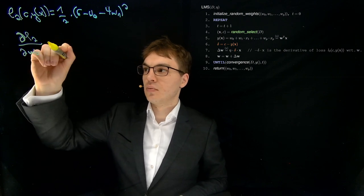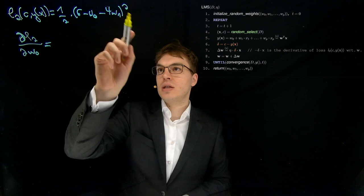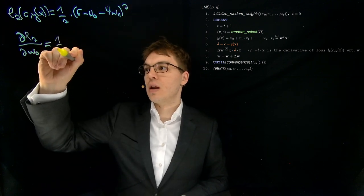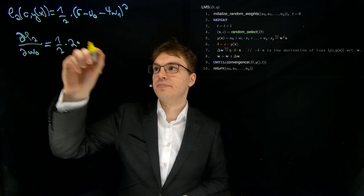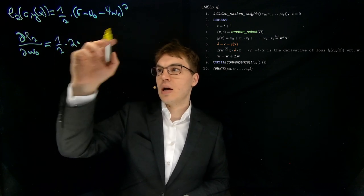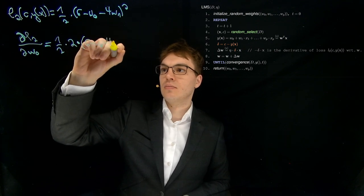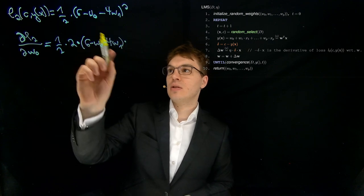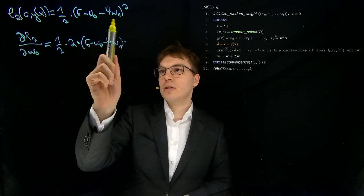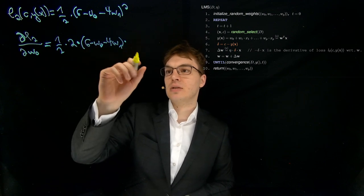And we will do this using the chain rule here. So it's one half times this two over here times this part times the inner derivative, but here we have a constant, here we also have a constant. The only thing we have is this minus one factor.